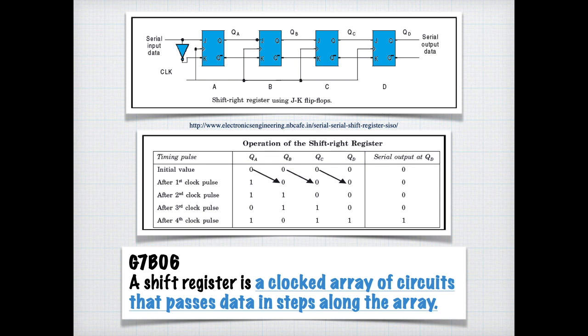Another type of circuit is a shift register. And the outputs of the shift registers do exactly what they say. For each clock pulse, the output of the first gets shifted to the second. For the exam, you just need to know that a shift register is a clocked array of circuits that passes data in steps along the array.